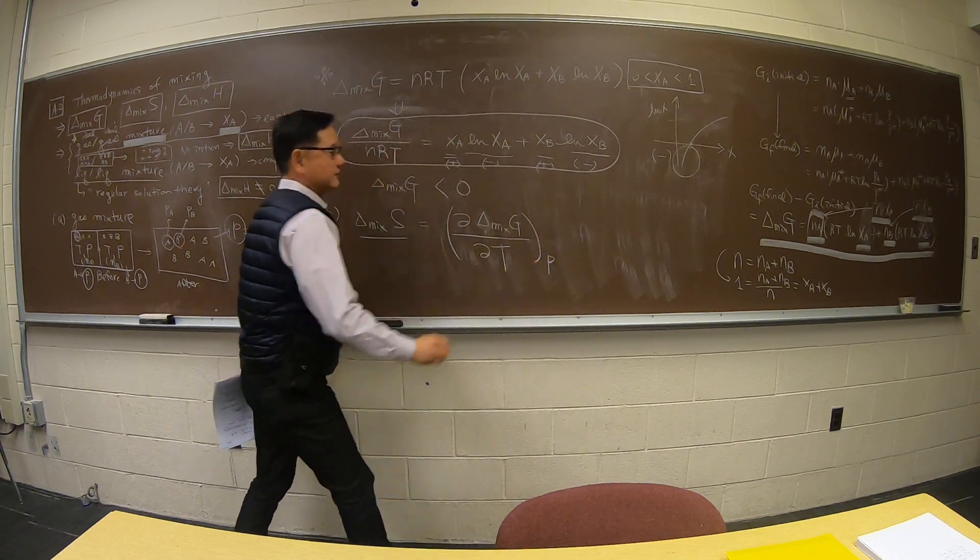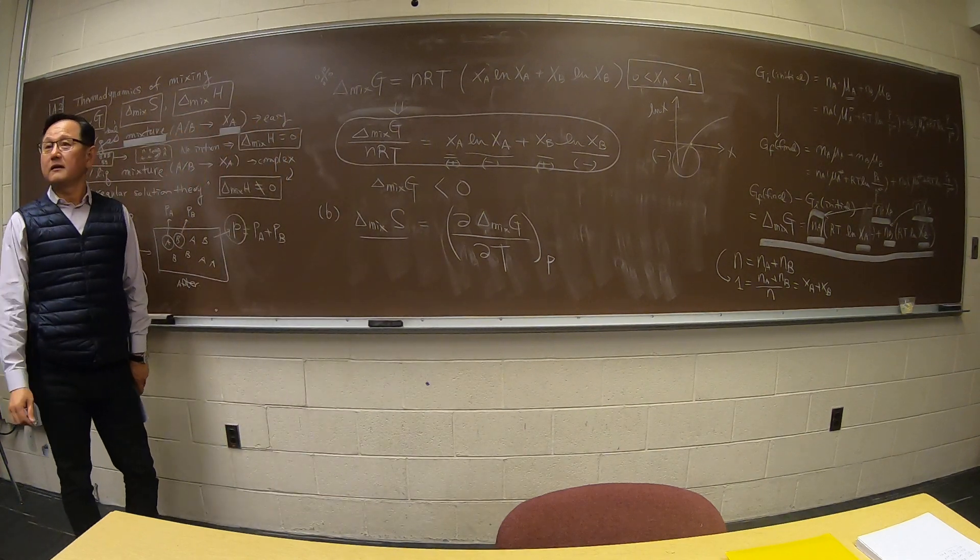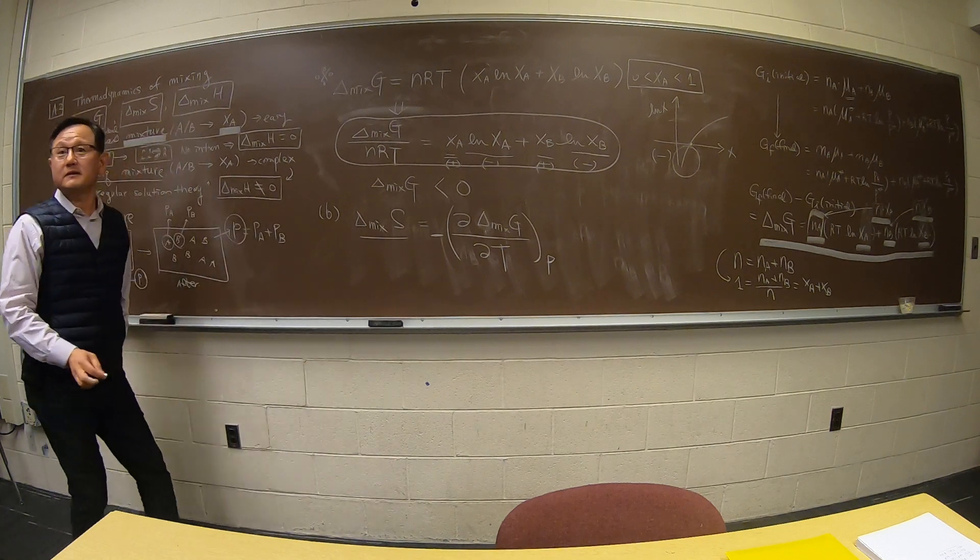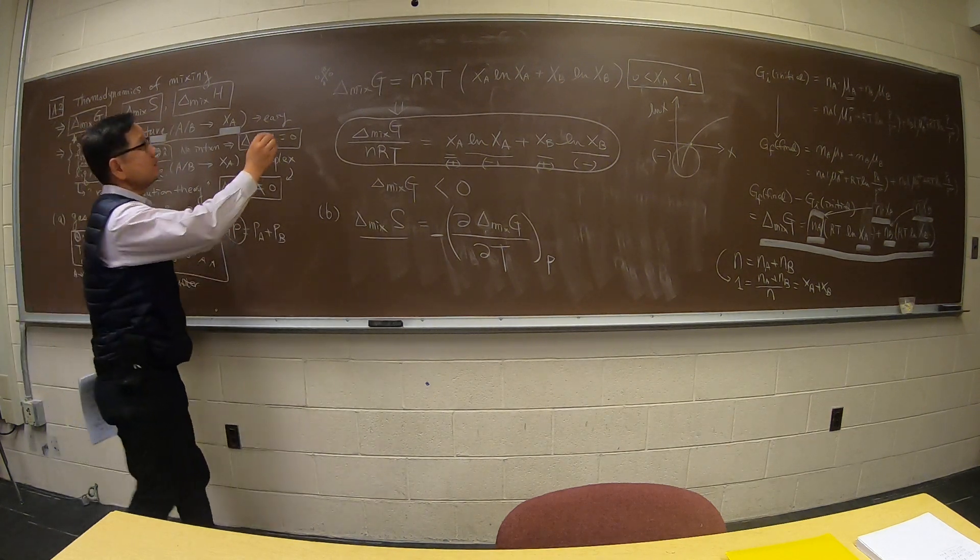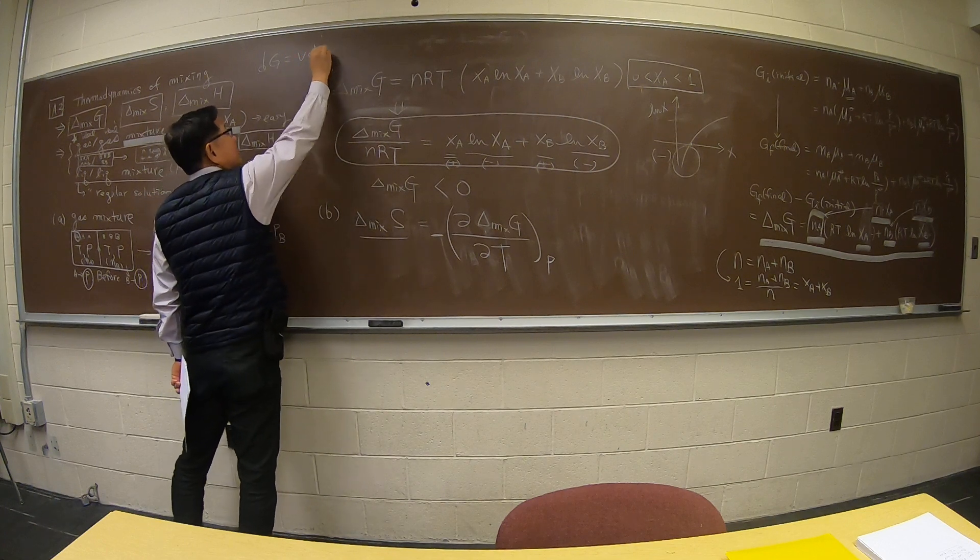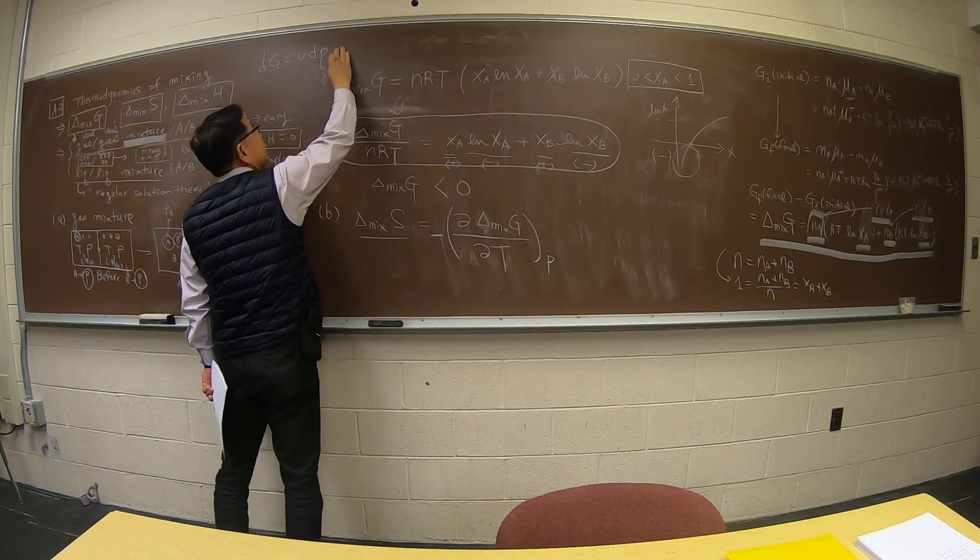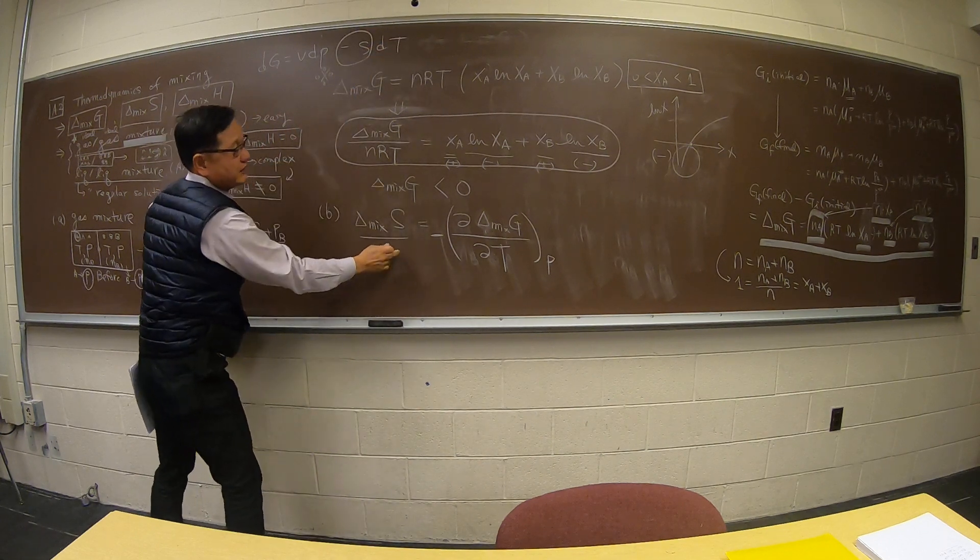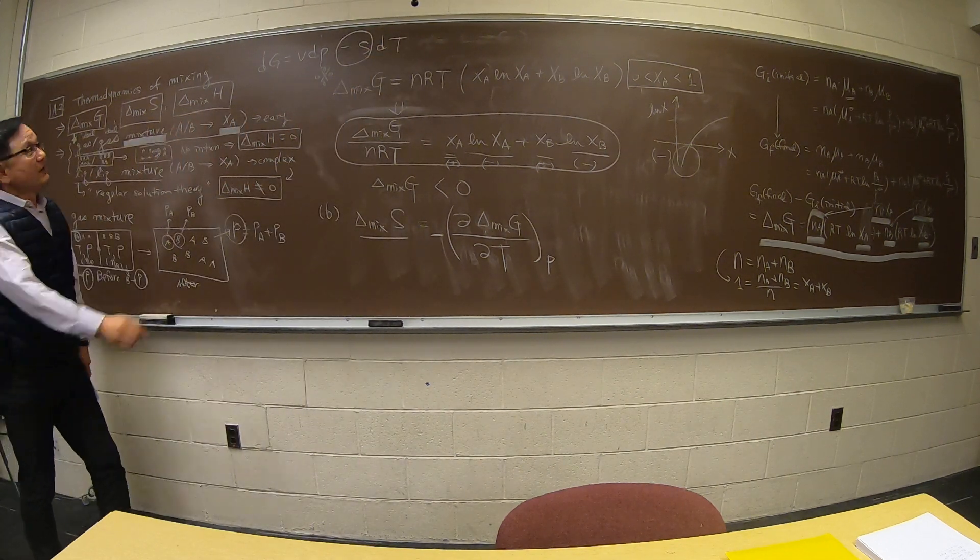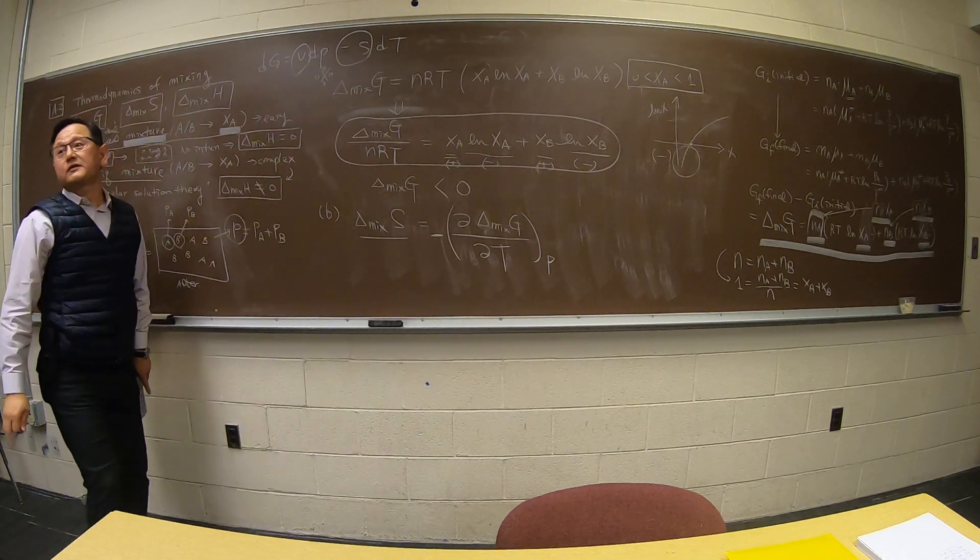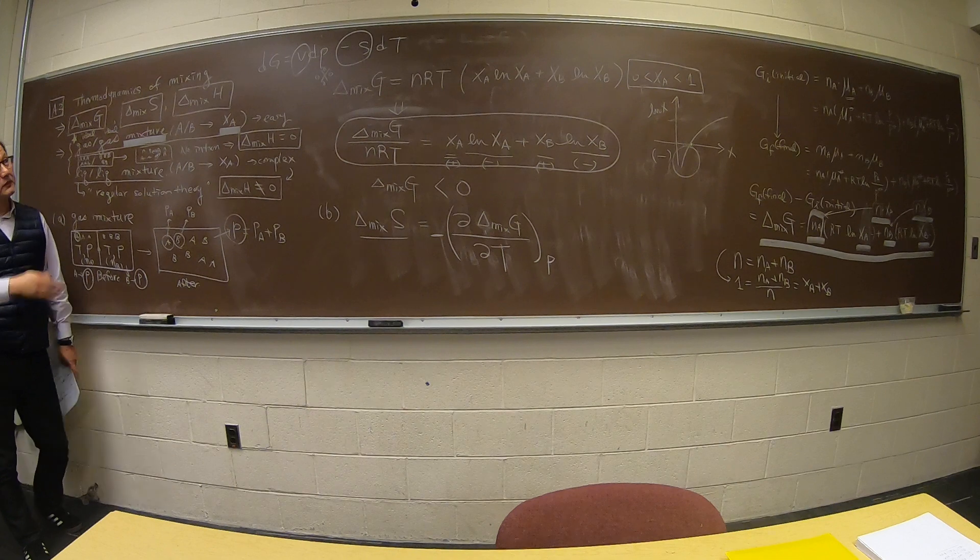Keeping the pressure constant, you remember this right? Everyone remember? dG - this is an equation we use over and over again. Minus S dT. Because of this term, we can get this right. We are using this term to get the chemical potential pressure dependence.